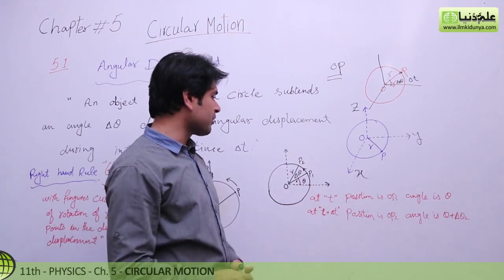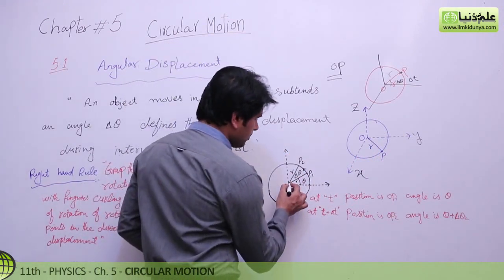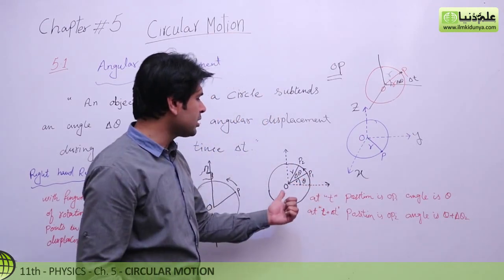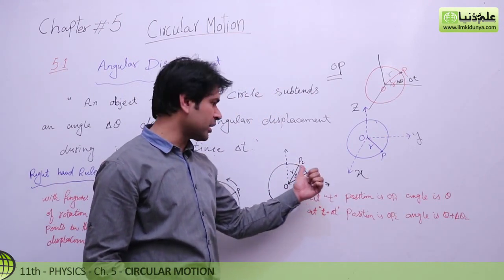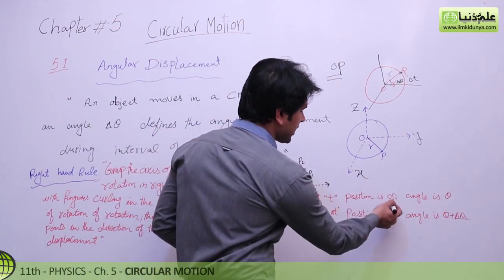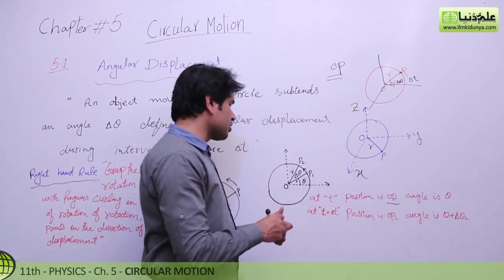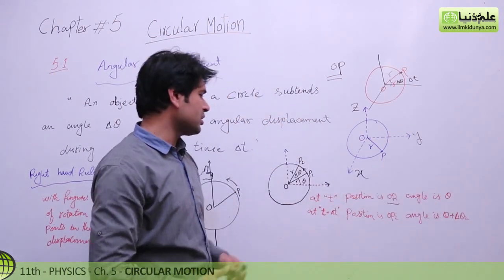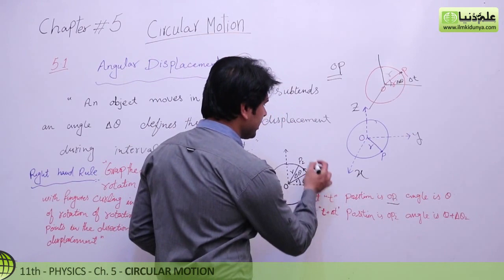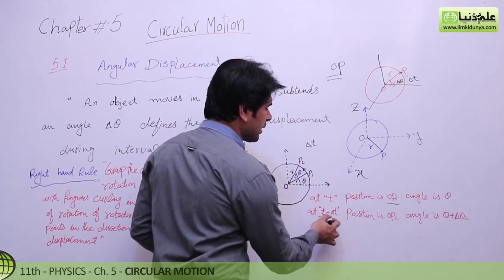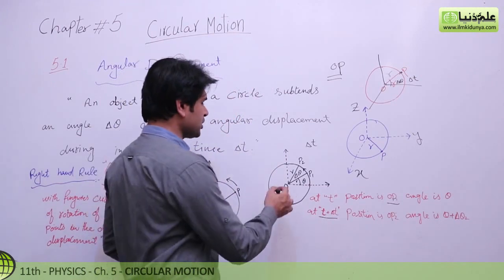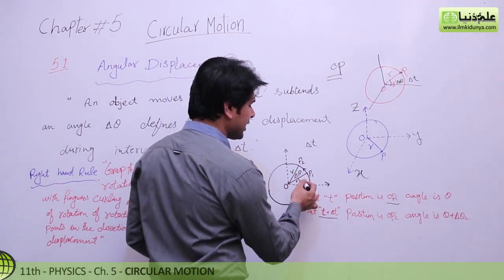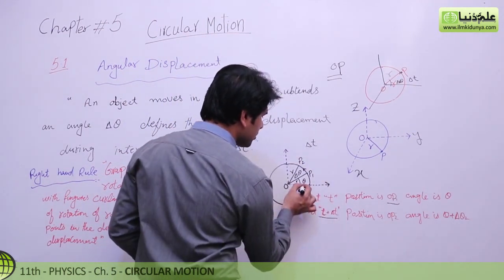Now, if we observe the rotation, the position of this particle was OP1. At time t, the position of point particle P1 is OP1, and the angle at the center of the circle is theta. After passing some time delta-t, at total time t plus delta-t, its position changes from OP1 to OP2. The angle becomes theta plus delta-theta. So, this total angle is theta plus delta-theta.